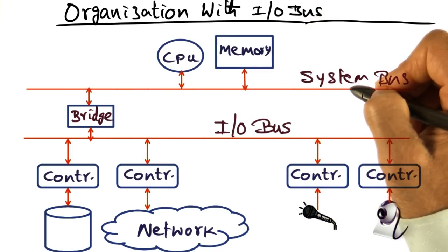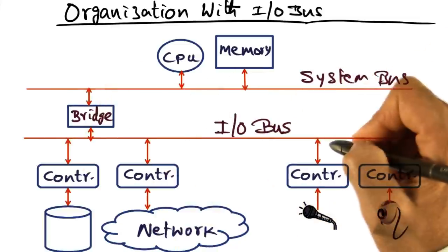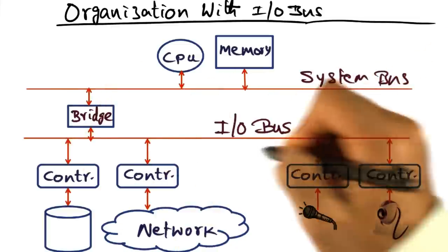Or in other words, the system bus has a communication bandwidth that is much more than the communication bandwidth that's available in the IO bus.